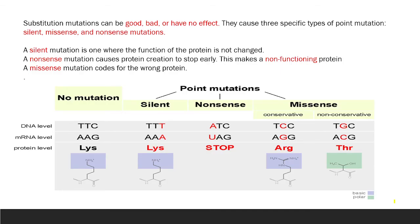Substitution mutation can be good, bad, or have any possible effect. We have three types of point mutations: silent mutation, missense mutation, or nonsense mutation. Silent mutation means there is a mutation but the protein function is not changed — there is no change in the function of the protein.